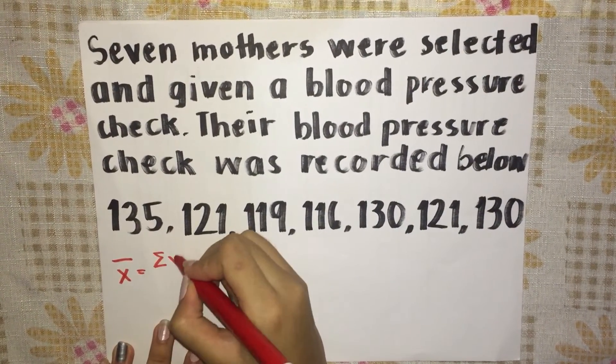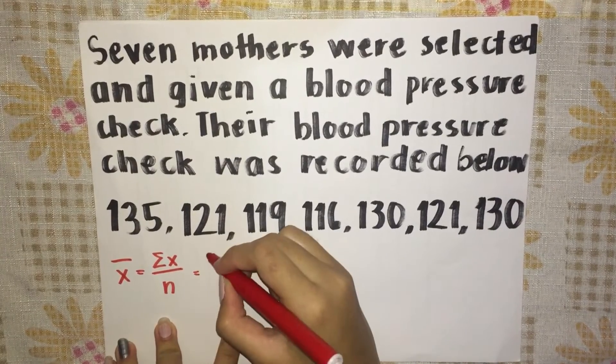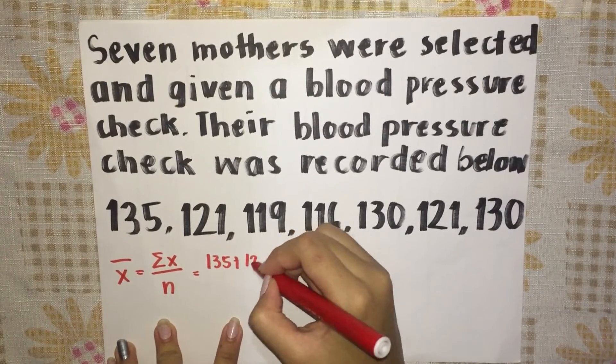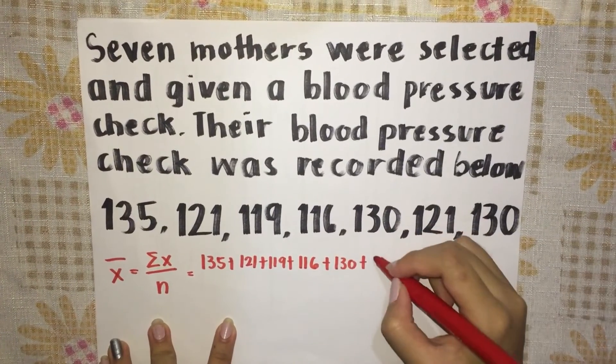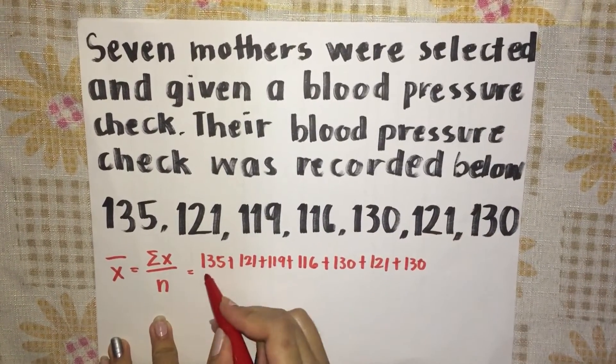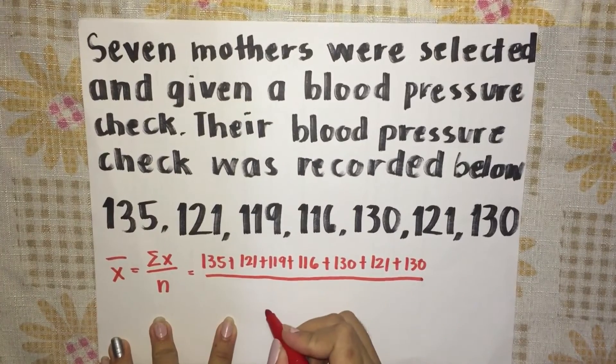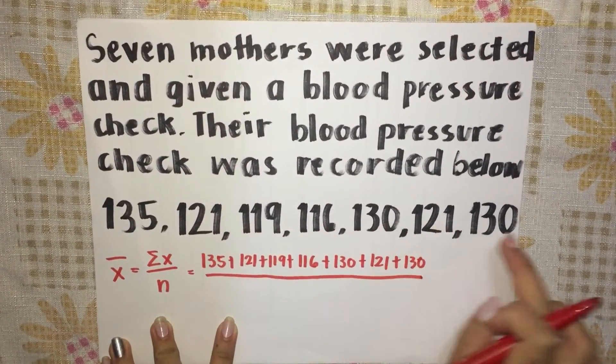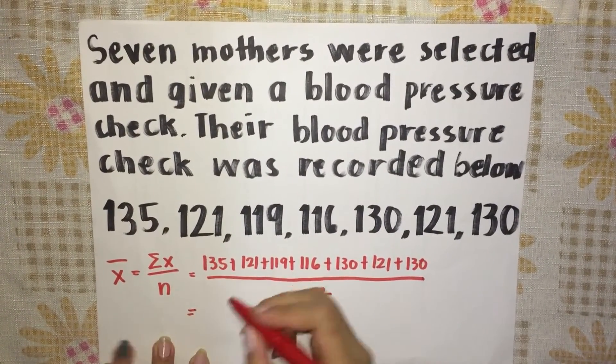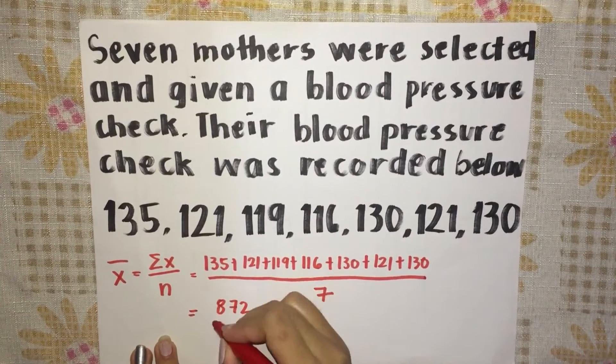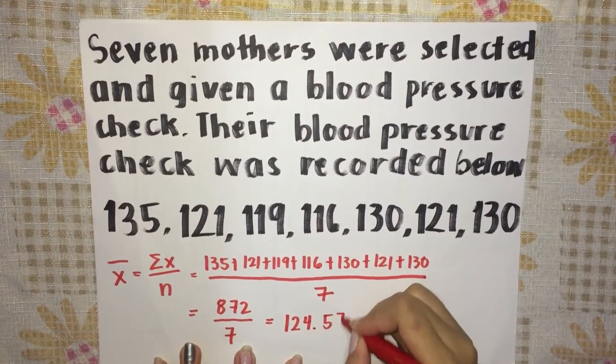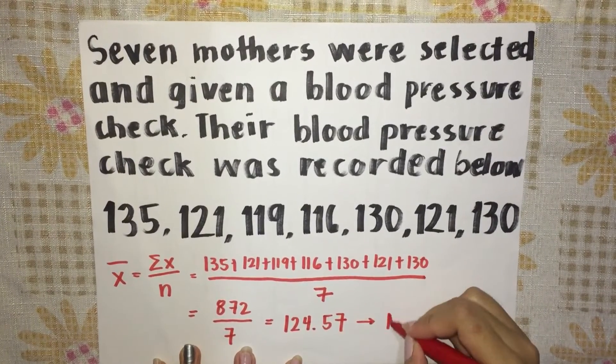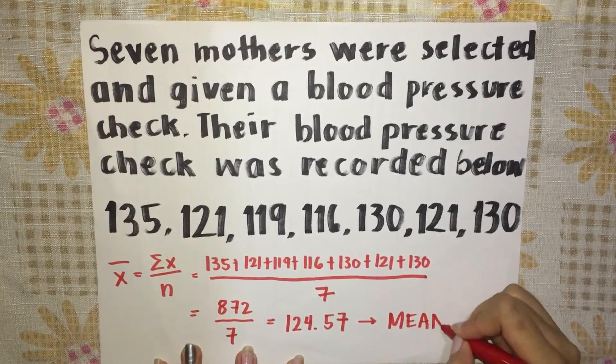To find the mean, add all the values then divide it by the total number of data. The sum of all values is 872. We shall divide it by 7, the total number of data given. The mean is equal to 124.57, rounded to the nearest tenths.